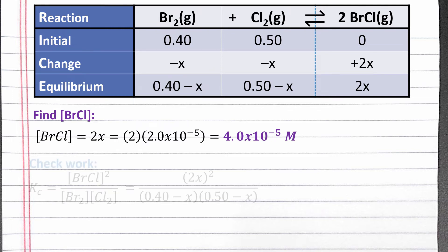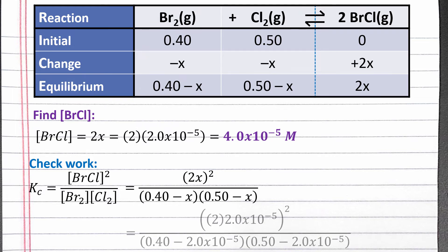To check that we solved for x correctly, we can plug the equilibrium row back into our equilibrium constant expression, substituting in the value of x that we calculated based on our simplifying assumptions. Completing this calculation, we should get 8.0 times 10 to the negative 9. Since this is our original value of Kc, we've solved for x correctly.